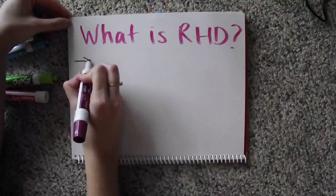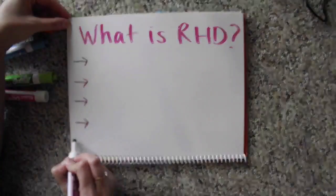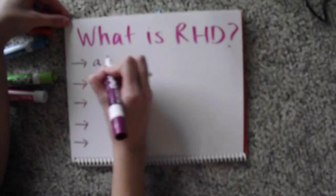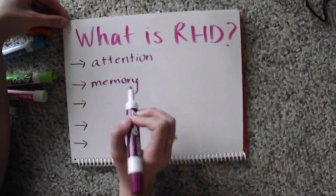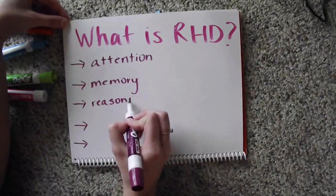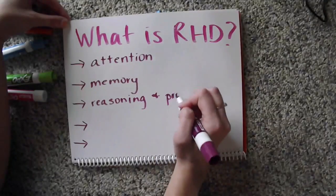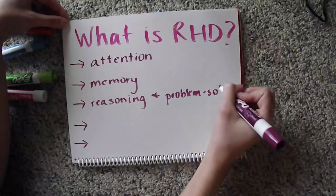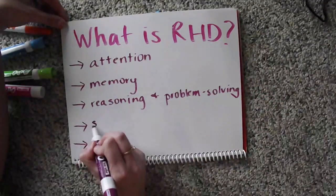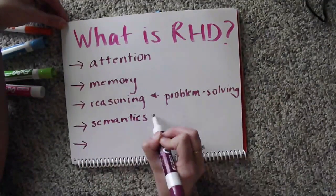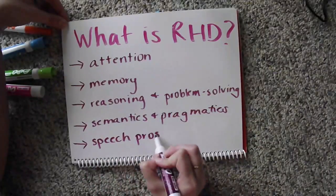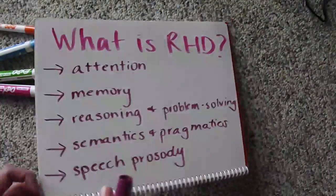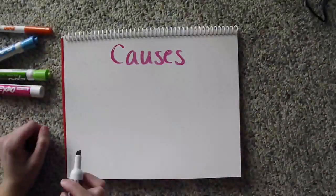So what is RHD? RHD is obviously damage to the right side or hemisphere of the brain. This side of the brain is responsible for attention, memory, reasoning and problem solving, semantics and pragmatics, and speech prosody.